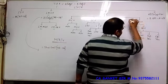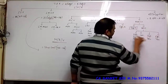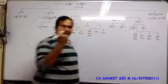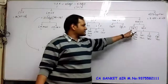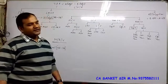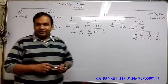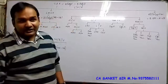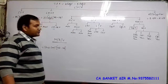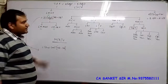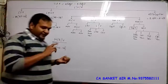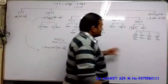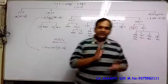No Cost Variance, no Volume, no Idle Time, no Calendar, no Capacity, no Efficiency — nothing. Only one variance: Expenditure Variance. This means your workload reduces significantly. In Fixed Overhead under marginal costing, you don't need to calculate recovery rates, and you don't need to calculate all those variances. Only one variance: Expenditure Variance. Its formula is very simple: Budgeted Fixed Overhead minus Actual Fixed Overhead.